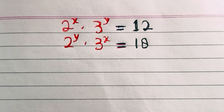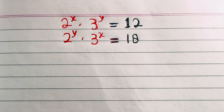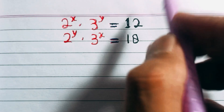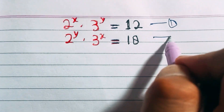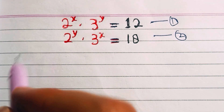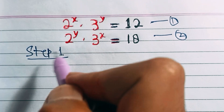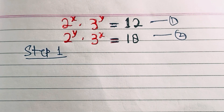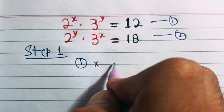Since these are two exponential equations, our target is to find the relationship between x and y. Let's make the first equation number one and the second equation number two. In step one, we will multiply equation one and equation two.